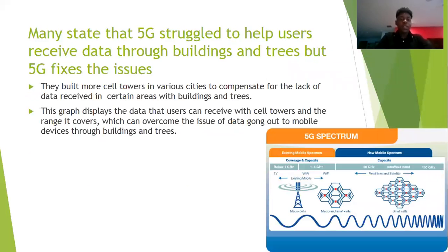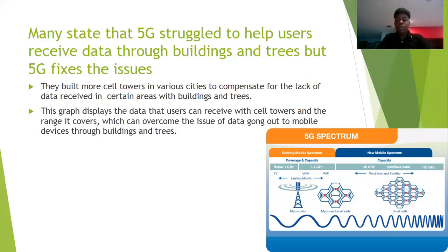Many would often state that 5G struggles to help users receive data through buildings and trees, which has also been a big issue. But 5G addresses this by building cell towers in various cities with a high population. The graph here shows how the cell tower works and how effective it is — it shows the millimeter waves, the gigahertz it operates at, and the coverage, capacity, and range it consists of.